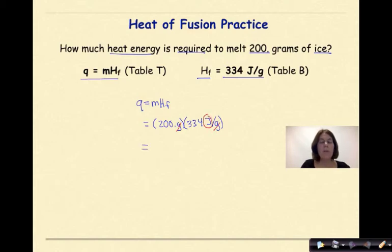And if we multiply these two things together, we get 66,800 joules of energy, which is to the correct number of significant figures, because we have three significant figures here, and we need to end with three significant figures at the end. Could we put this into scientific notation? Of course we could.